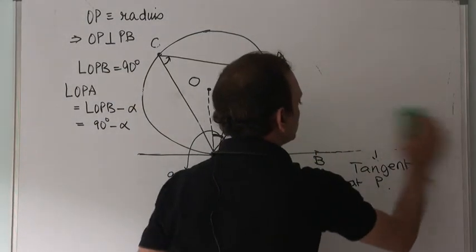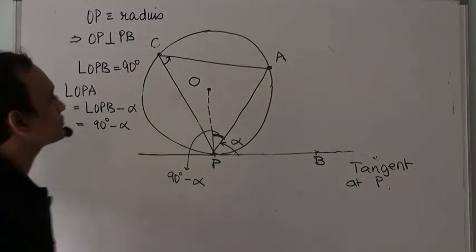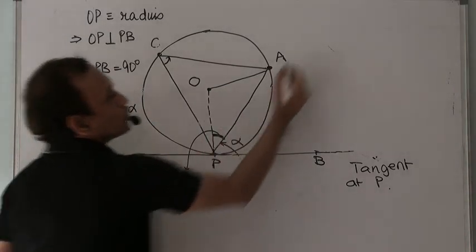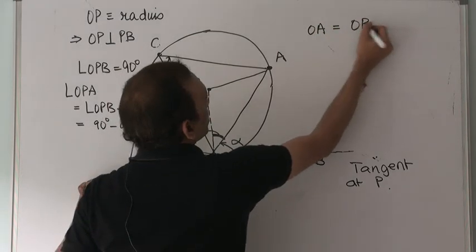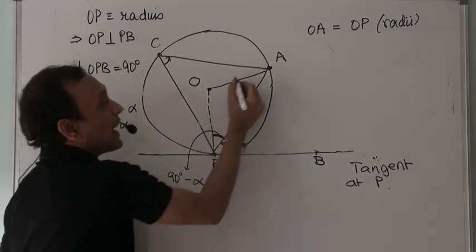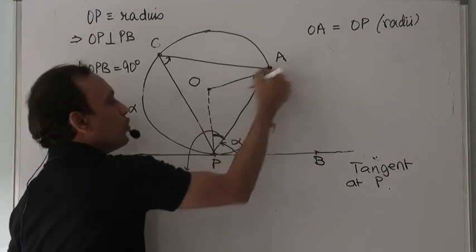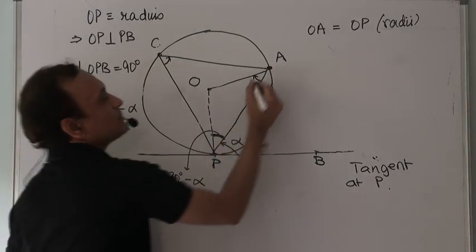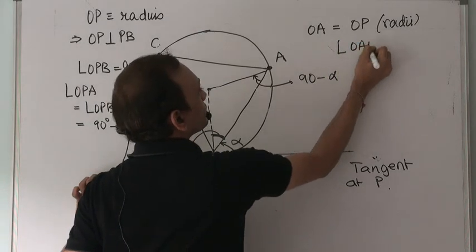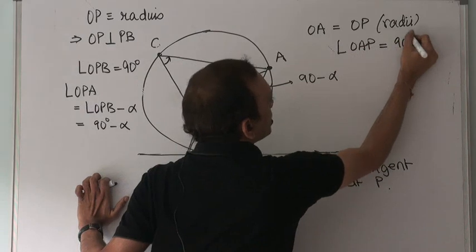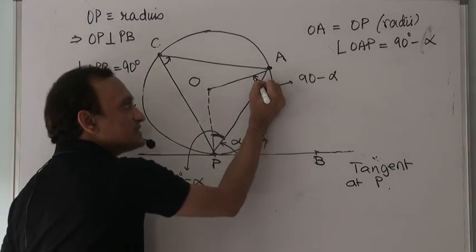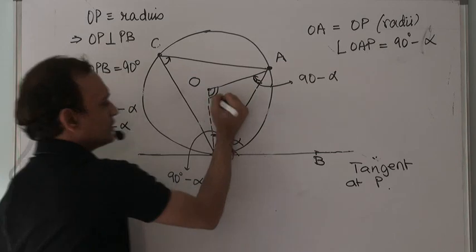Now join O to A, which is another radius. OA equals OP since they are radii of the same circle. Triangle OPA is therefore isosceles, so angles opposite equal sides are equal. Since angle OPA is 90 minus α, angle OAP is also 90 degrees minus α.